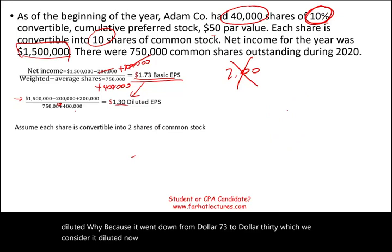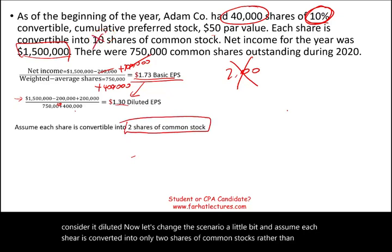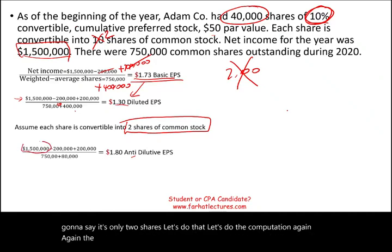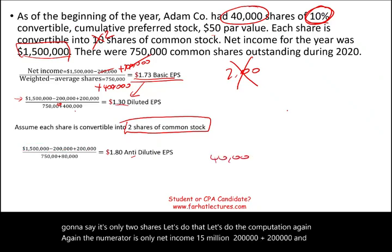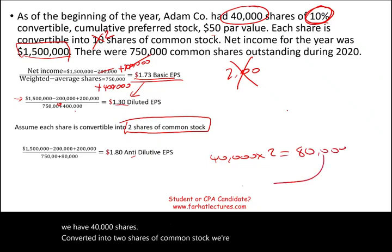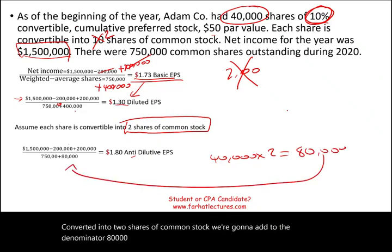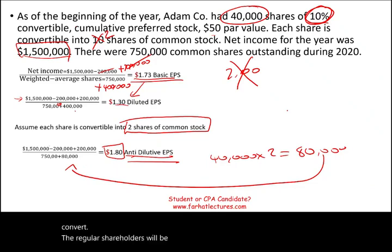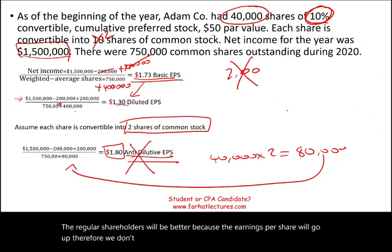Now let's change the scenario and assume each preferred share is convertible into only two shares of common stock instead of ten. The numerator stays at net income of $1.5 million (preferred dividend deducted and added back). We add 40,000 times 2 = 80,000 shares to the denominator: 750,000 plus 80,000 = 830,000. The new EPS is $1.80, which is anti-dilutive — it went up from $1.73. So we don't report it; we throw out the computation.